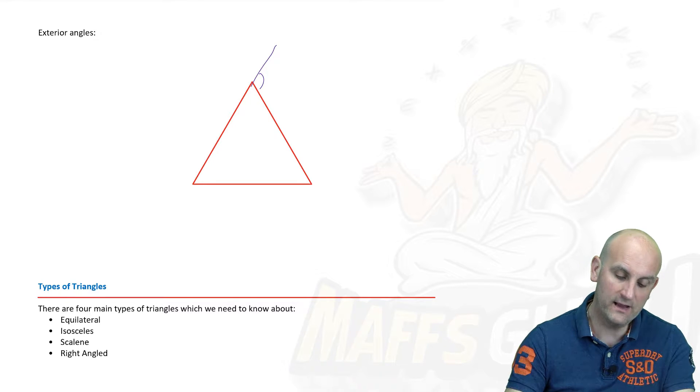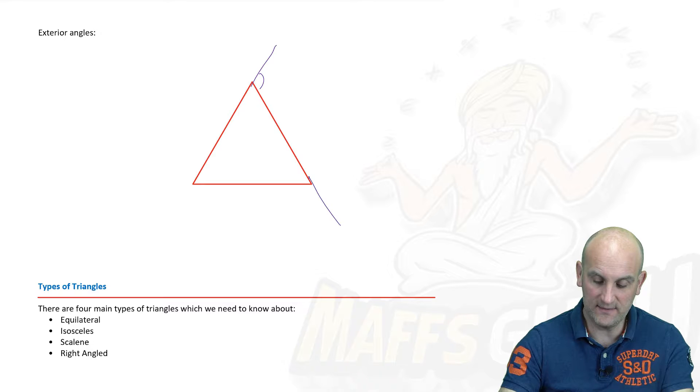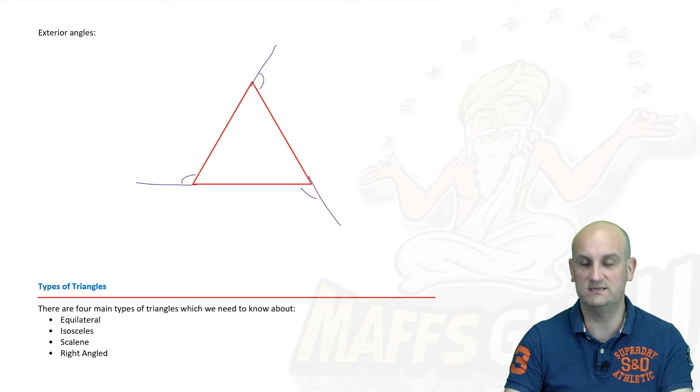So, there we go. I extend that, and there is my exterior angle. I extend this, and there is an exterior angle, and I extend this, and there is my exterior angle. But I suppose the question is, what do all of these angles add up to?